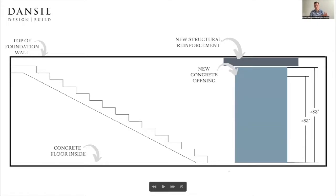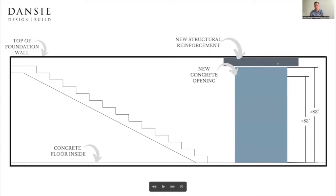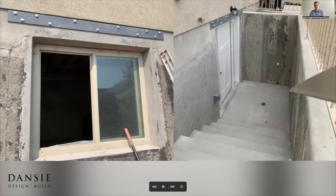After we get the reinforcement cut and installed and everything done, then we can move to cutting the concrete opening, which is less than 83 inches tall, and bring it right up to at least 83 inches. Then we can put in the door and trim that out with either stucco siding or just trim, depending on the width and what the situation actually requires. That's going to be unique for every home and the situation we're in.